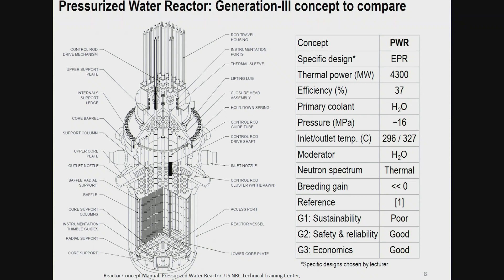Starting with the Generation 3 concept as a reference — also used in our exercise — it's the classical pressurized water reactor. As a specific example, the EPR is selected: thermal power 4300 megawatt, efficiency 37%. The primary coolant and moderator is light water at 16 megapascals pressure, inlet-outlet temperature around 300 degrees. The neutron spectrum is thermal, therefore breeding gain is low.